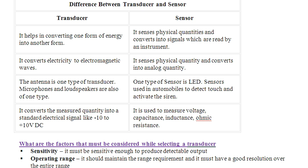The transducer converts the measured quantity into a standard electrical signal, such as -10 to +10 DC volts. The sensor is used to measure voltage, capacitance, inductance, ohmic resistance, etc. These values are measured by the sensor.